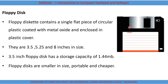A floppy disk contains a single flat piece of circular plastic coated with metal oxide and enclosed in a plastic cover. The floppy disk is also based on magnetic disk technology and works similarly to a hard disk, but its storage capacity is very much less — around 1.44 MB. Floppy disks are smaller, portable, and cheaper, but they have become obsolete now.